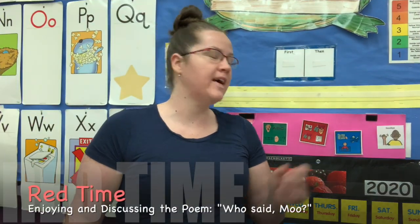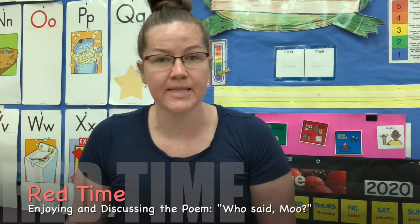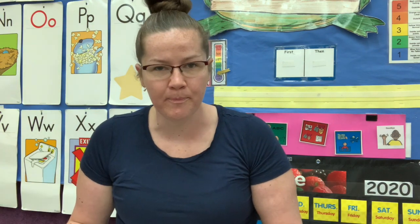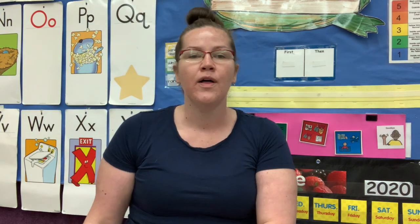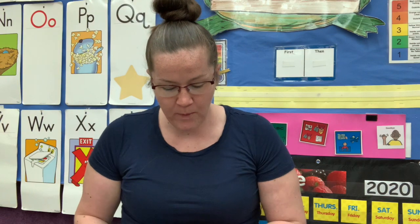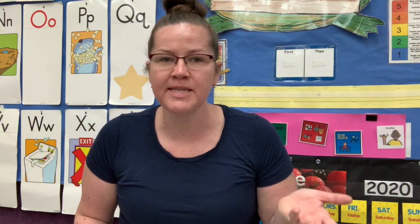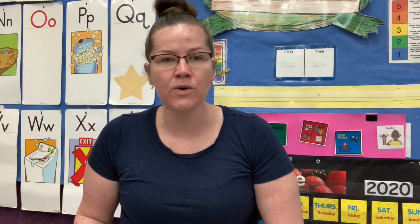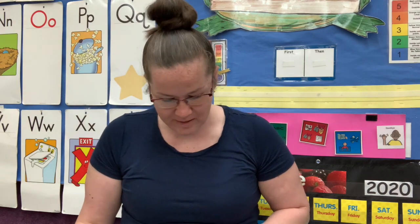It's red time, which means it's story time. Today I'm going to read a poem — this poem doesn't have any pictures. The poet — remember, that's the person who writes the poems — is Stephanie Clemonson. The title of this poem is called 'Who Said Moo?' What type of animal says moo? So what do you think this poem might be about? Let's read and find out.